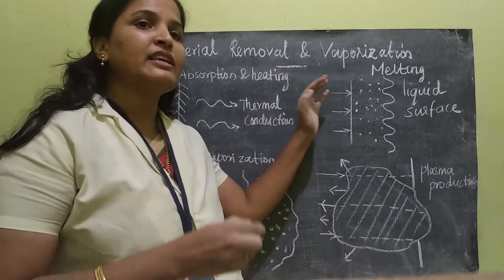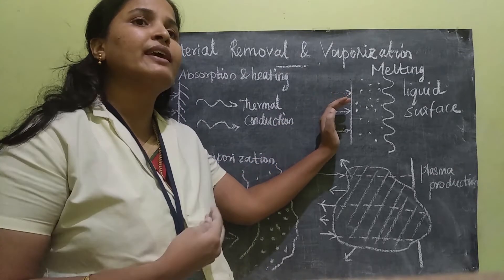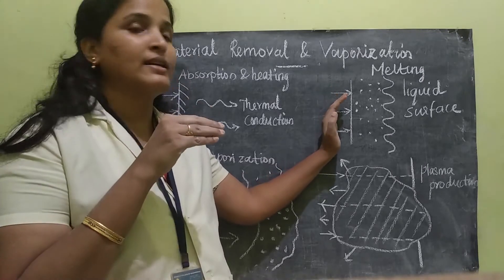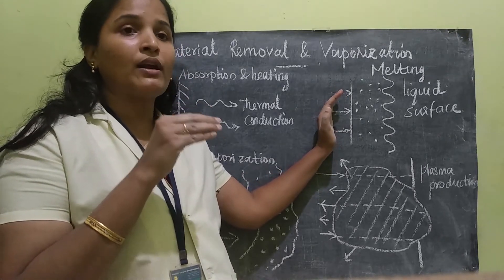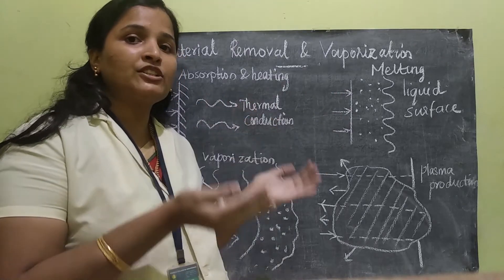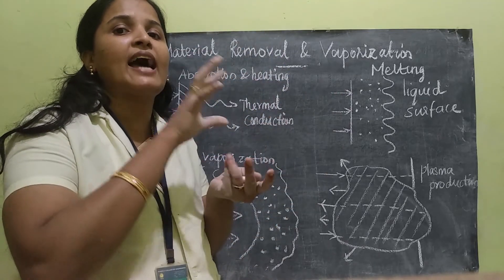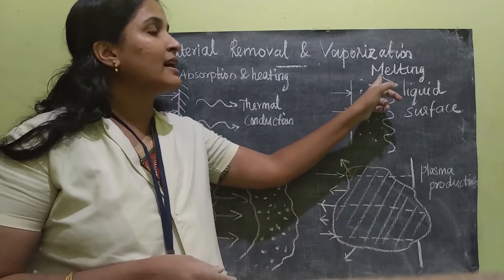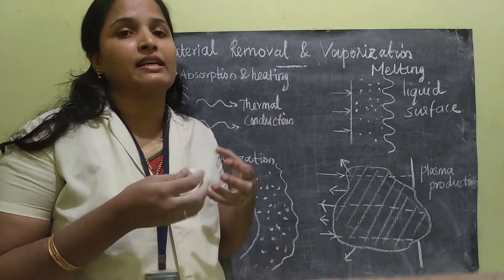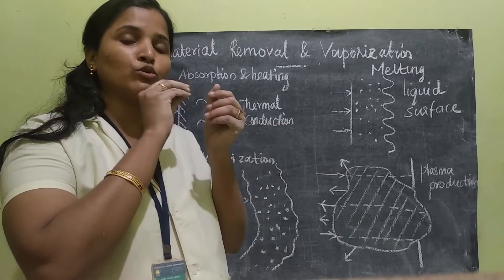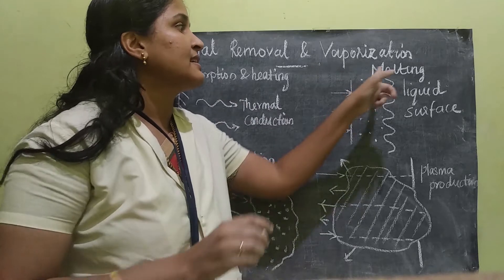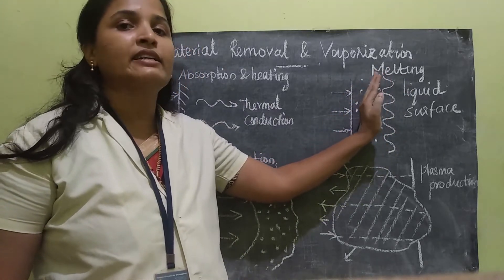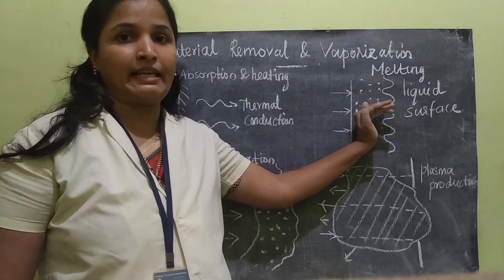The next step is: if I continue shining the laser light towards the same material, what will happen? The thermal conduction causes the temperature to keep on increasing, and it will form a liquid state. That means the material is melting. The portion of the material near the laser beam starts melting, so we will have a slight liquefication in this area.